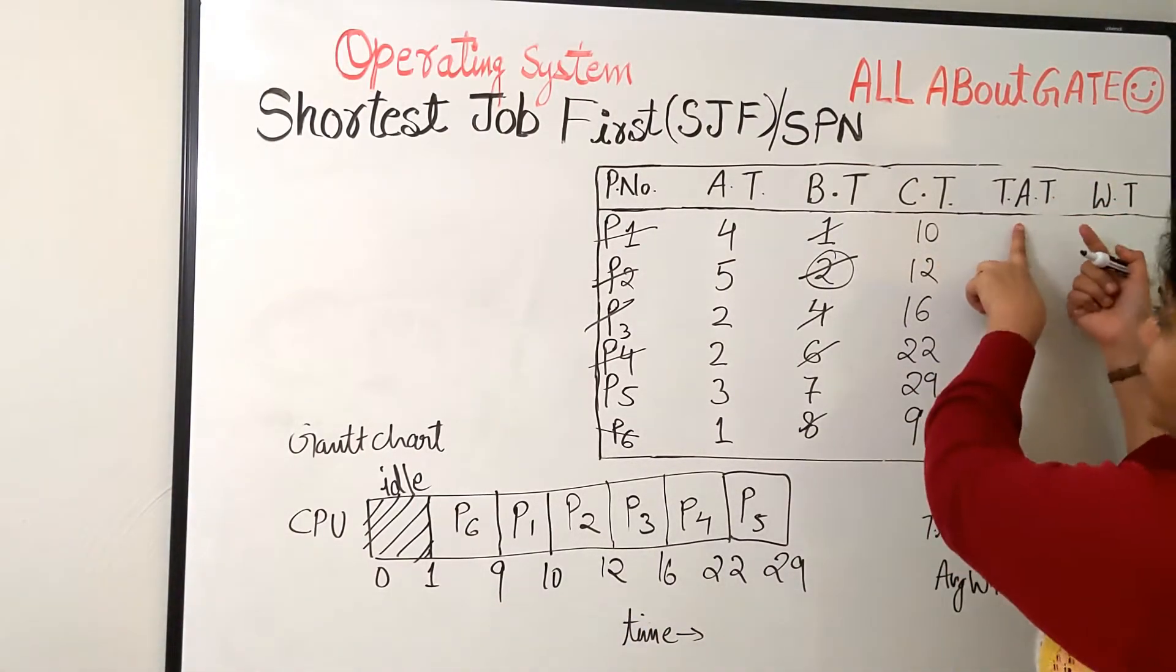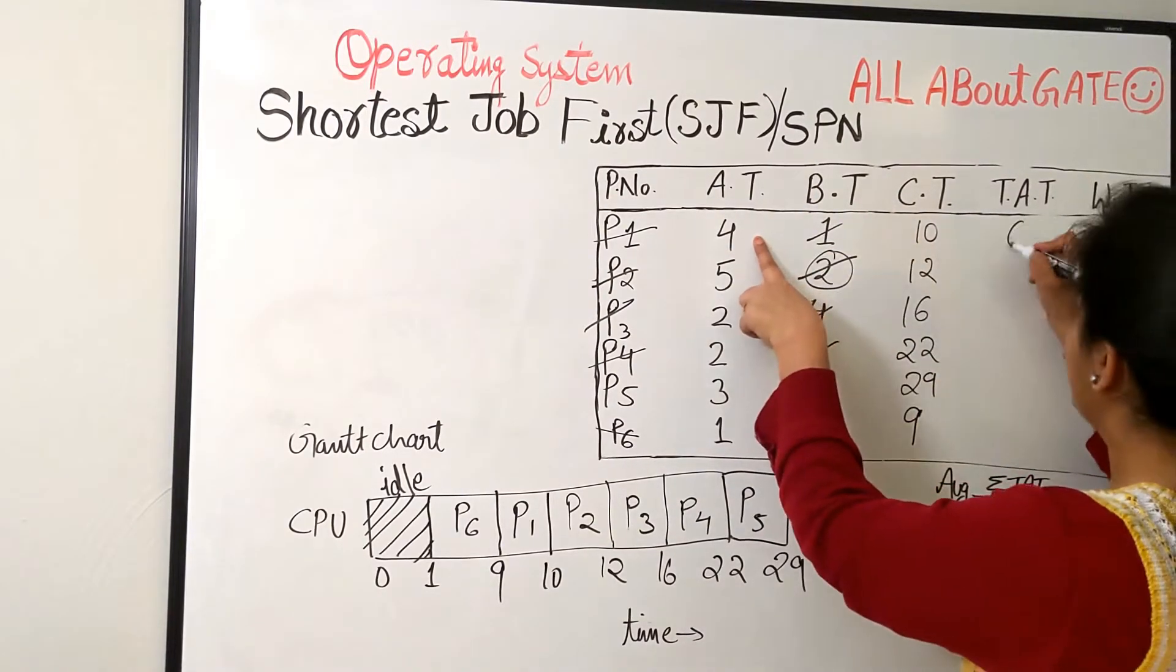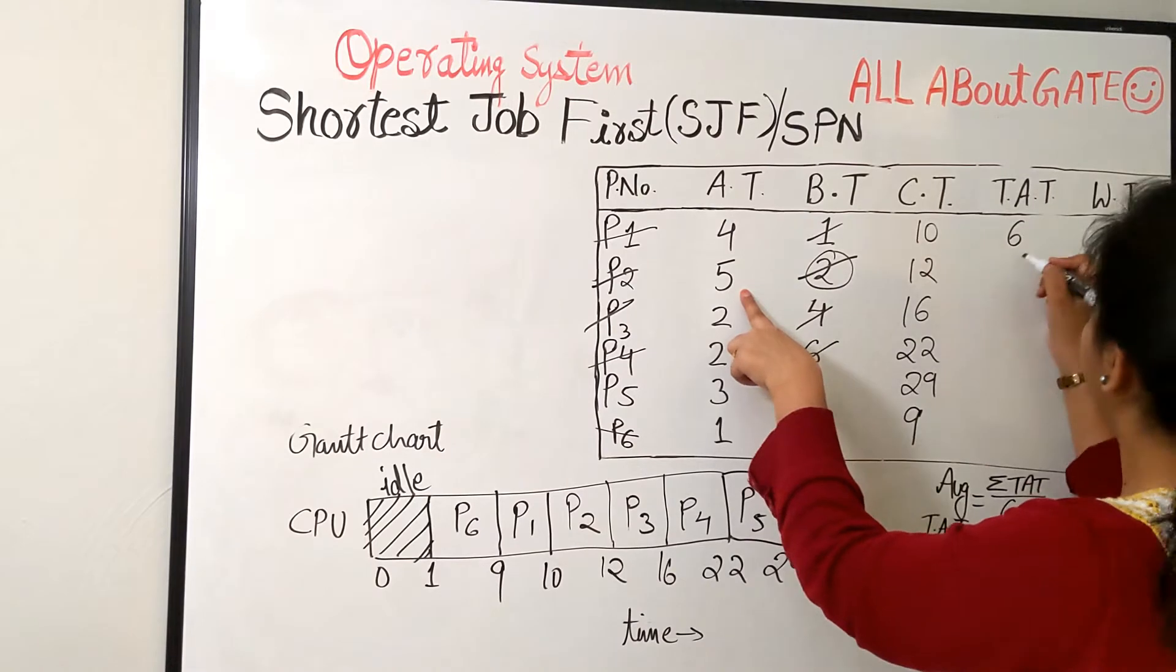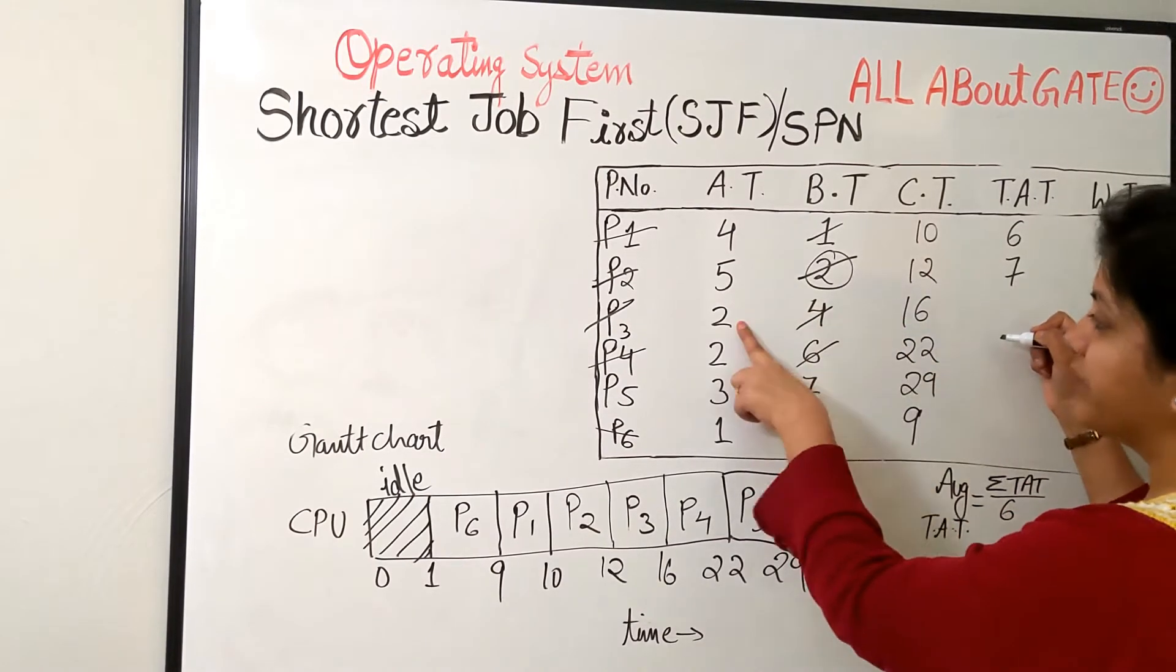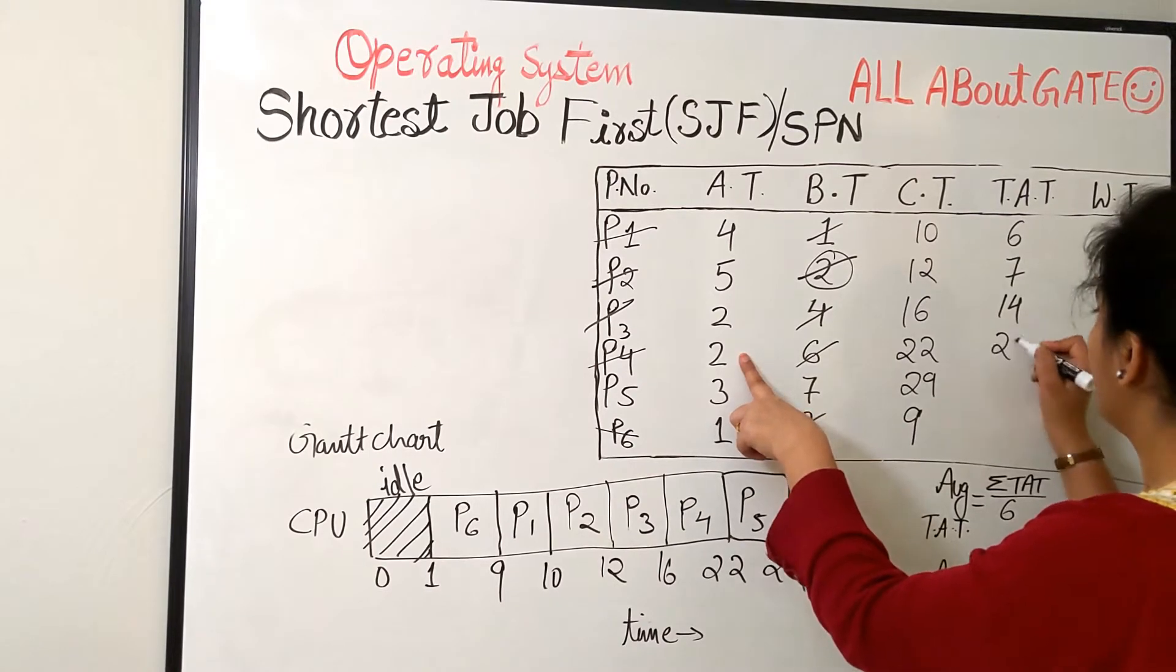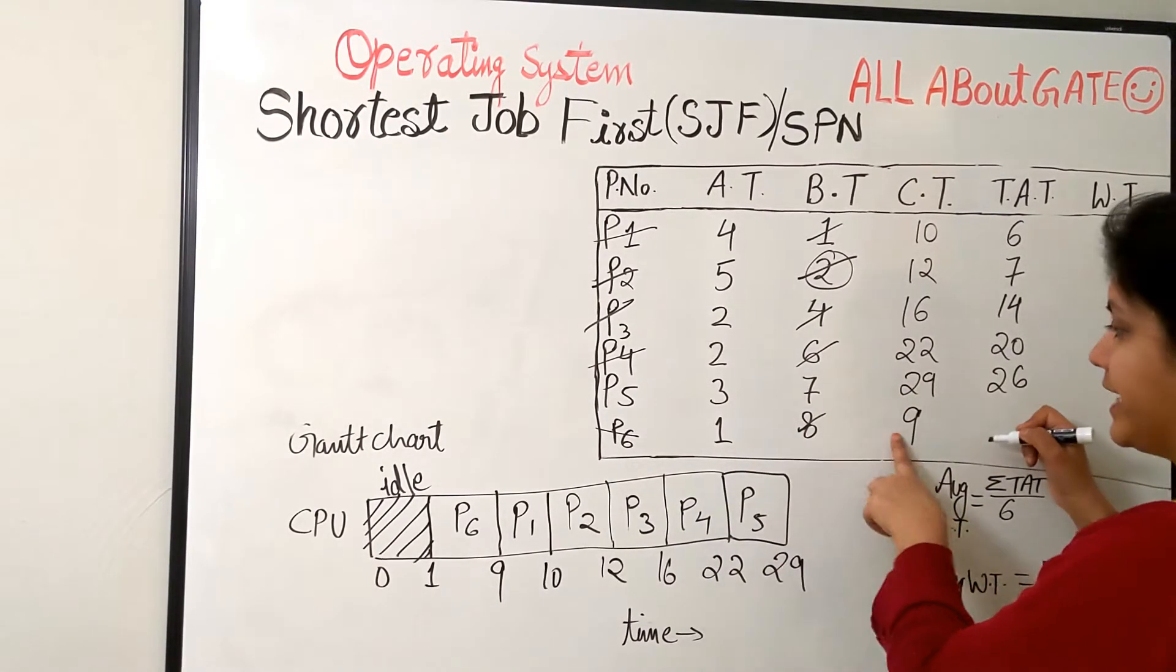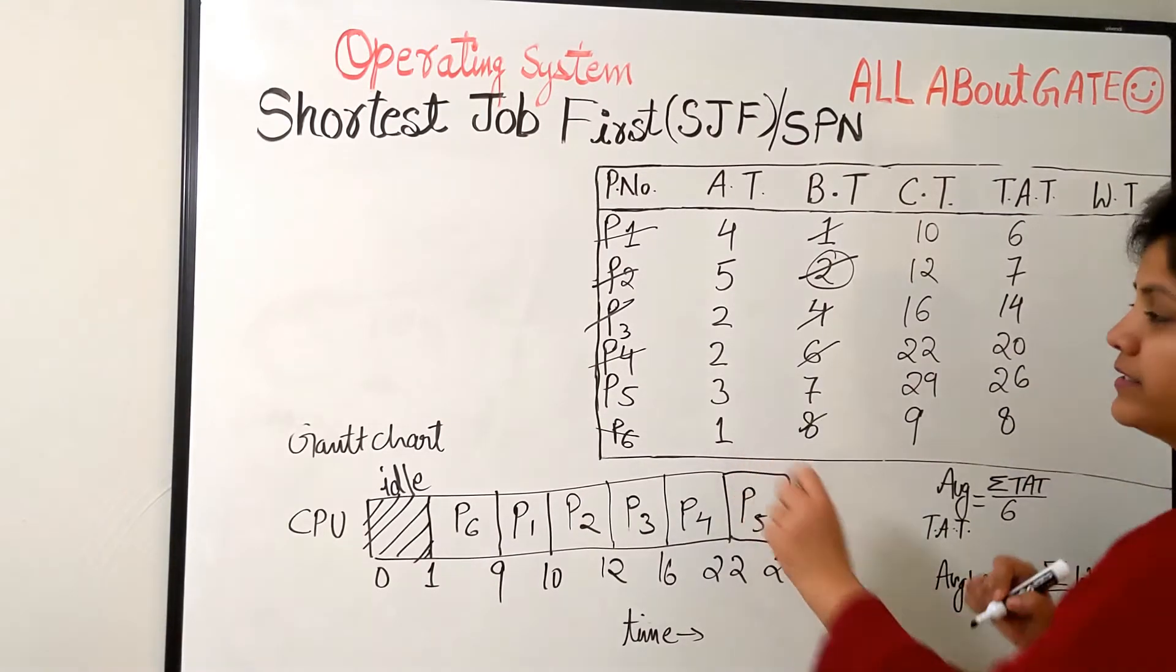Now quickly the turnaround time. Nothing but completion time minus arrival time. So 10 minus 4, 6. 12 minus 5, 7. 16 minus 2, 14. 22 minus 2, 20. 29 minus 3, 26. 9 minus 1, 8.